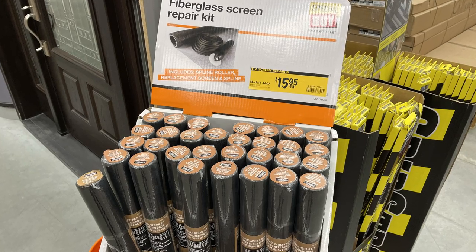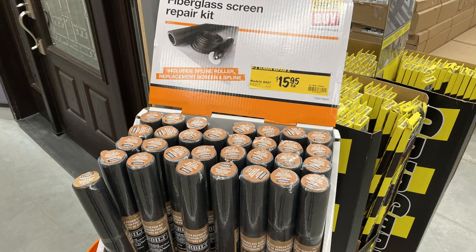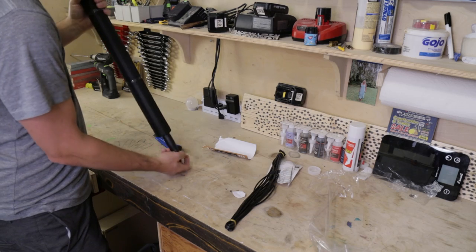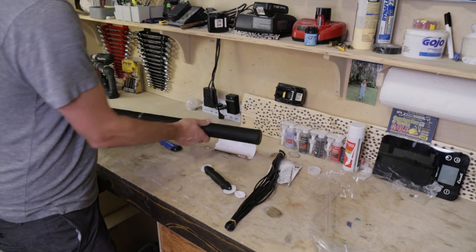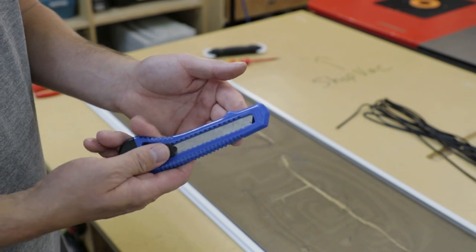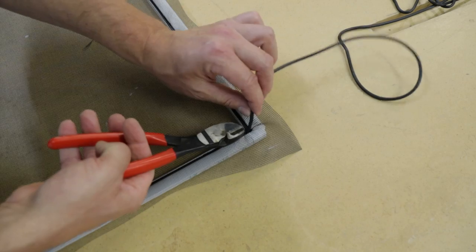I ended up just grabbing one of the all-in-one combo kits that comes with the screen, spline, and the little roller. Now for tools, you're gonna need the spline roller, an exacto knife, a flathead screwdriver, and some side cutters will be handy to cut the spline at the very end.